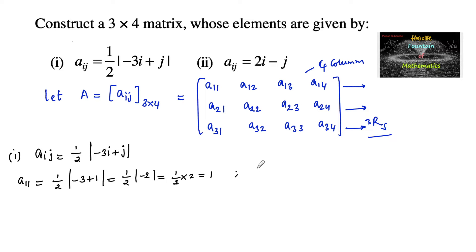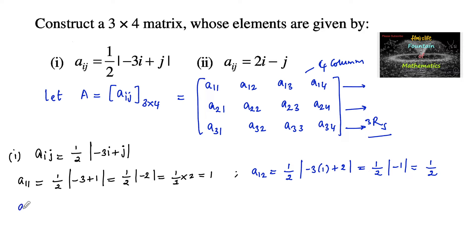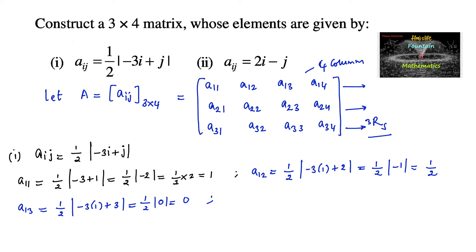Next, A12 = (1/2)|−3×1 + 2| = (1/2)|−3 + 2| = (1/2)|0| = 0. And A14 = (1/2)|−3×1 + 4| = (1/2)|1| = 1/2.